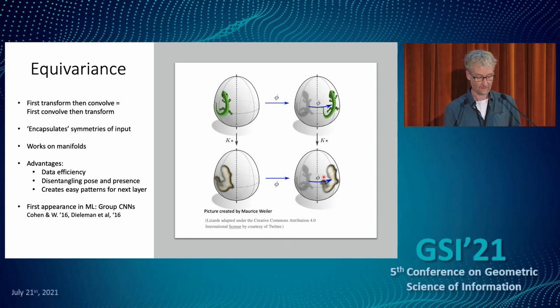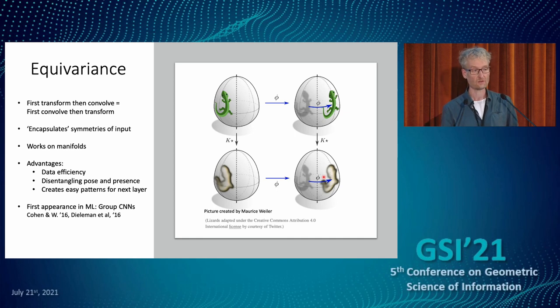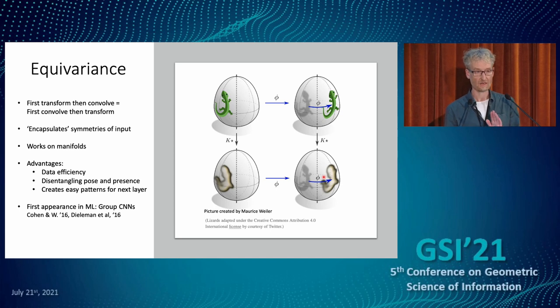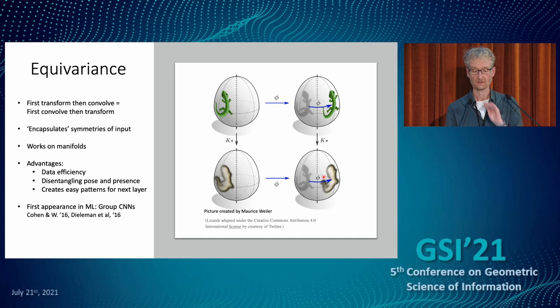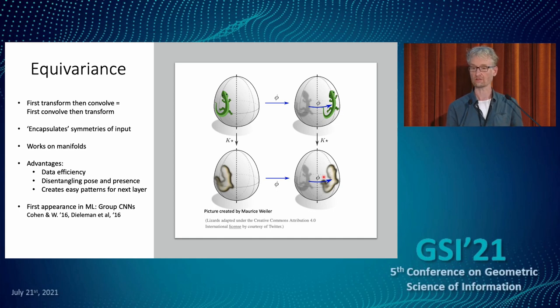Jeff Hinton wrote a paper defining capsules, which turn out to be irreducible — or more generally, representations of the input defined in the hidden layers. The advantages include data efficiency: for pure translations, if you want to identify a cat it doesn't matter whether it's on the left or right side of the image. With one filter applied everywhere, you get an equivariant output, and you only need parameters equal to the size of that filter — very different from analyzing the whole image at once.